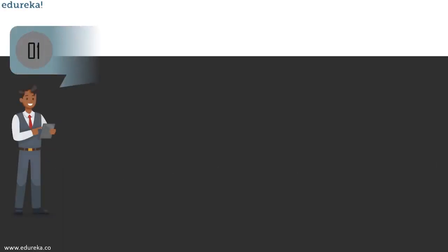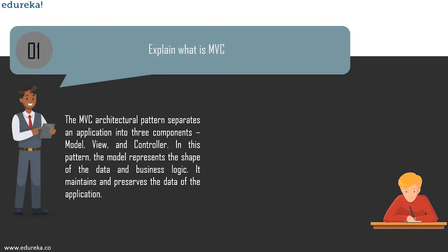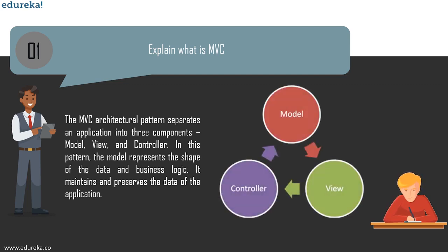The first question is: what is MVC? MVC is an abbreviation for Model, View, and Controller. The MVC architectural pattern separates an application into three components. The Model represents the shape of the data and business logic — it maintains and preserves the application data, and model objects retrieve and store the model state in a database. The View is the user interface that displays data to the user and enables them to modify it. The Controller handles the user request.